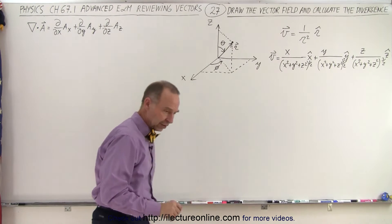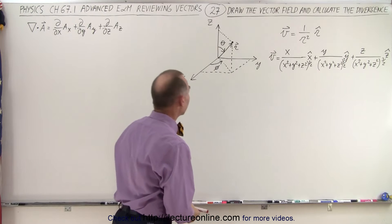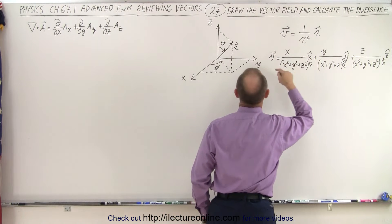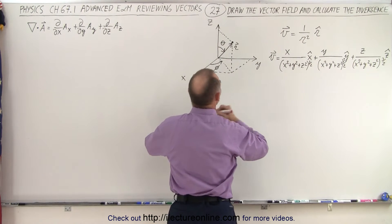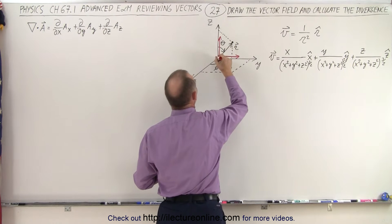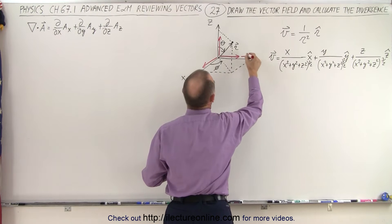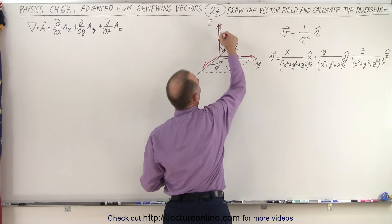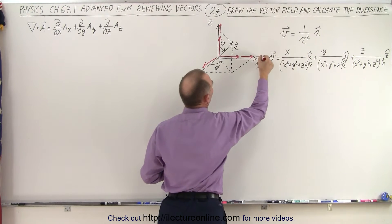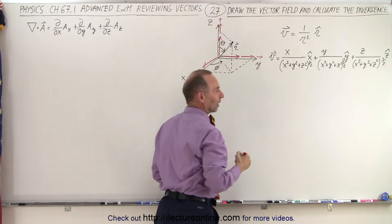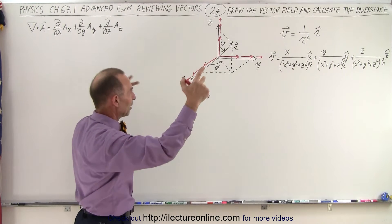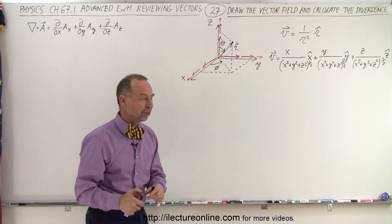We're also supposed to draw the vector field. Notice that when r becomes small, 1 over r squared becomes very big, so the vector is larger closer to the origin. In all directions — x, y, or z — we're going to have a large vector near the origin. Then as we go further out, it becomes smaller, because as r gets big, the ratio gets smaller. So the vector field is drawn in the x, y, and z directions, and you can imagine it's radially outward from the origin in all directions.